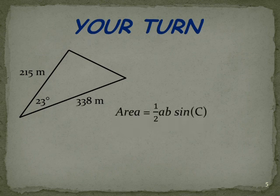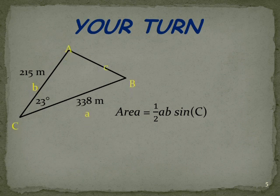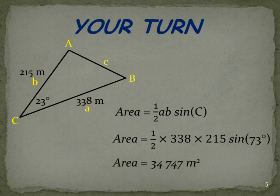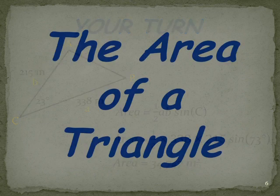First of all, here's our area. A half AB sin C. We label the diagram to reflect the formula. Substitute in our measurements. Use the calculator and come up with the answer. So, in this particular paddock, it's about 34,747 square metres. Done.